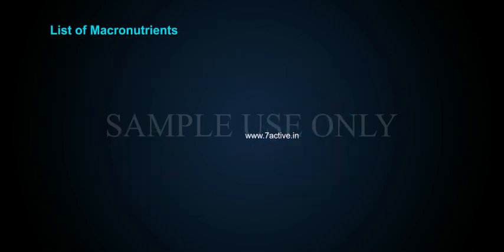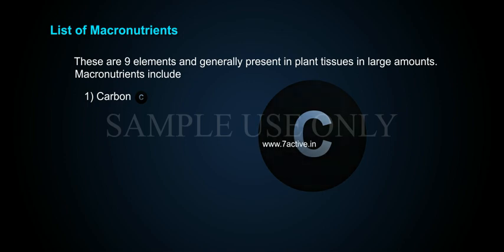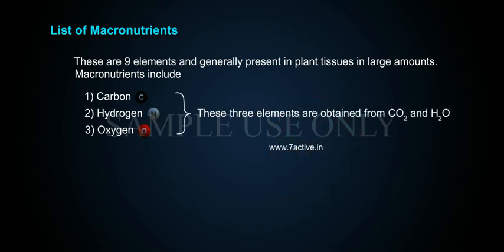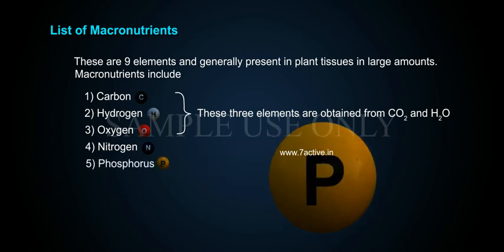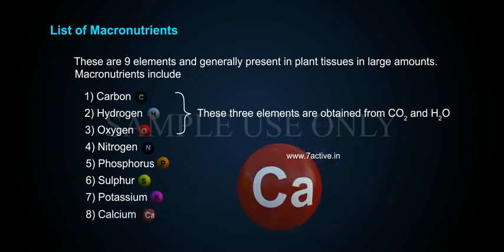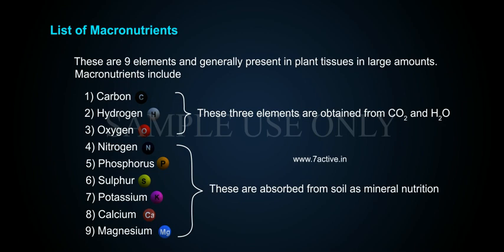Macronutrients are nine elements generally present in plant tissues in large amounts. They include: 1. Carbon, 2. Hydrogen, 3. Oxygen — these three are obtained from CO2 and H2O — 4. Nitrogen, 5. Phosphorus, 6. Sulfur, 7. Potassium, 8. Calcium, and 9. Magnesium. The remaining six are absorbed from the soil as mineral nutrition.